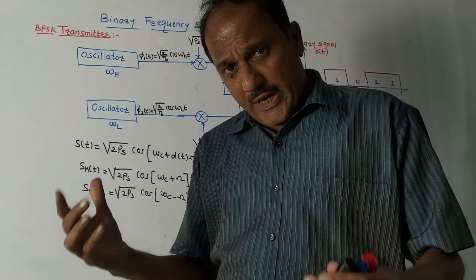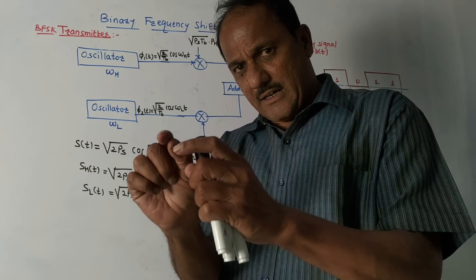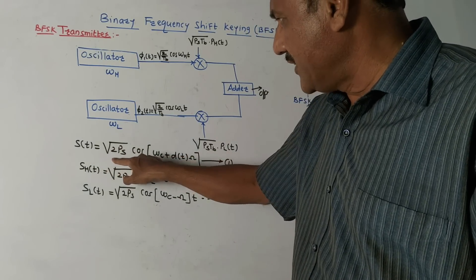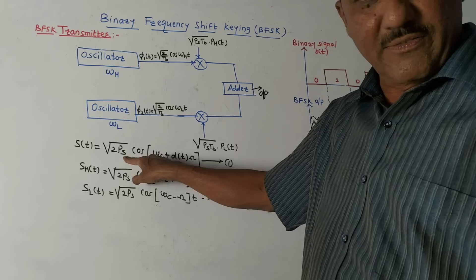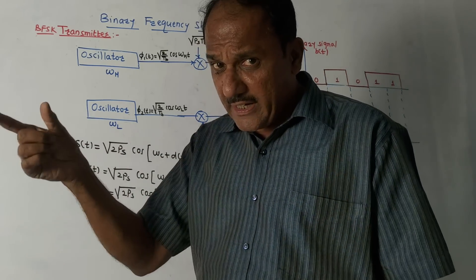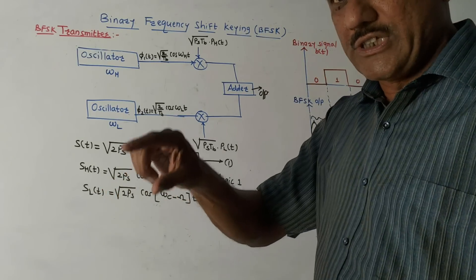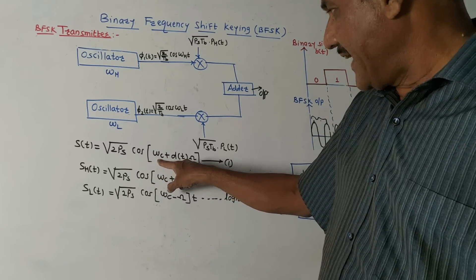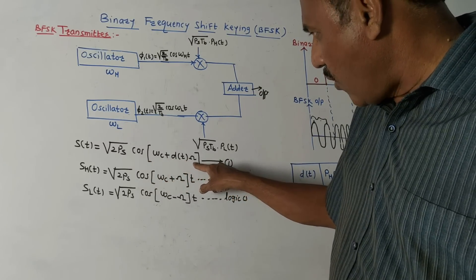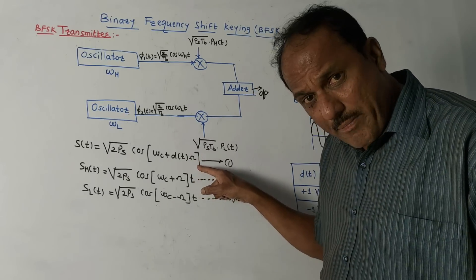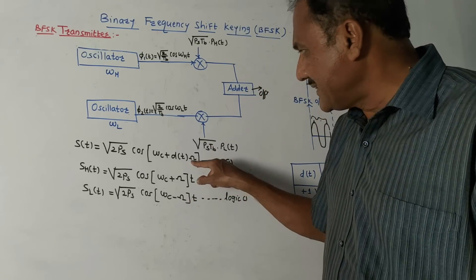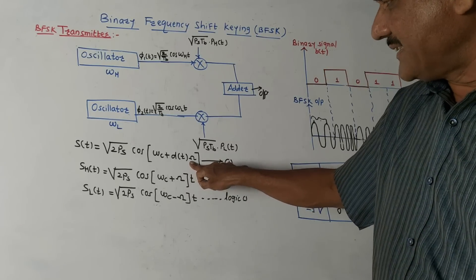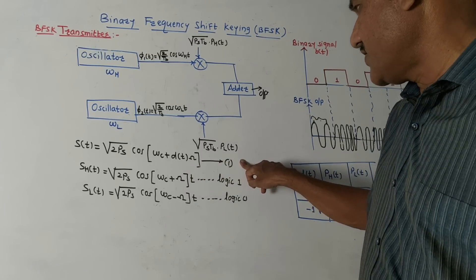Now we will talk about the mathematical equation. The output of the BFSK transmitter, s(t), is given by: s(t) = √(2Ps) · cos(ωc + d(t)·Ω) · t, where ωc is the carrier frequency and Ω is the frequency of the analog signal. This is equation number one.